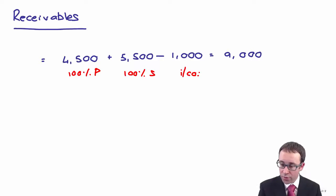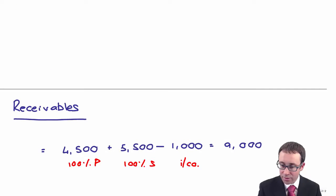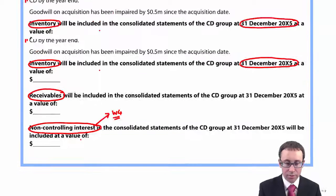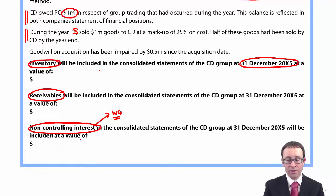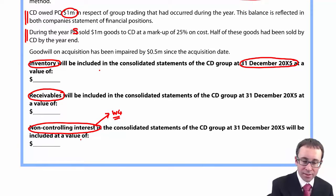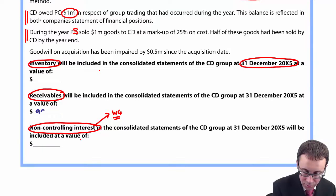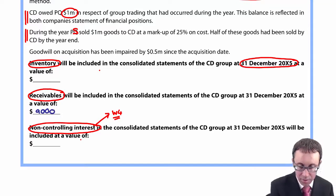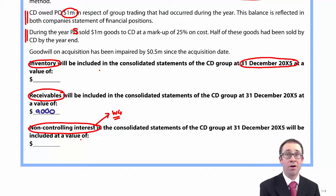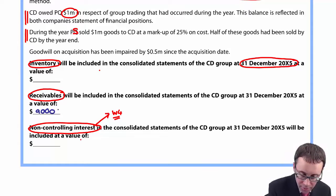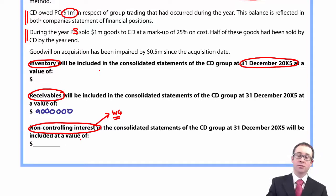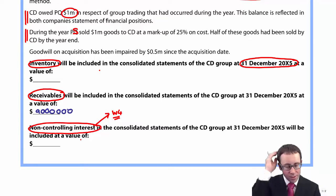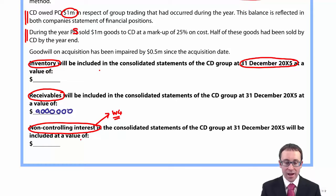Do be careful when you go through and put that into the answer, because the question asks for the answer in dollars. If you were to just put in 9,000, although you're correct, the computer will mark it wrong. The reason is that those figures are in thousands, so 9,000 thousands is essentially 9 million. So enter 9,000,000.